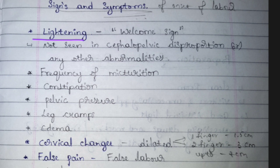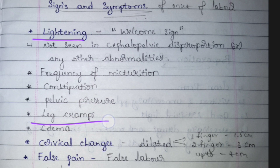Next is frequency of urination — you will be frequently going for urination. Next is constipation; lack of water is the common reason. Pelvic pressure is felt when the baby is moving downwards. Since the baby is moving downwards, you will also have leg pain, leg cramps, and edema is also possible.